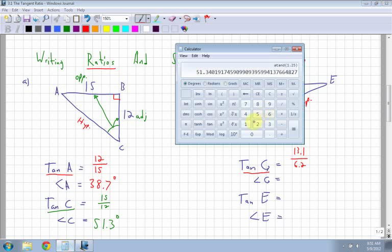For the angle, you type in 13.1 divided by 6.2. I get 2.11. Then I have to use the inverse, or shift, tan button, and I get 64.7.